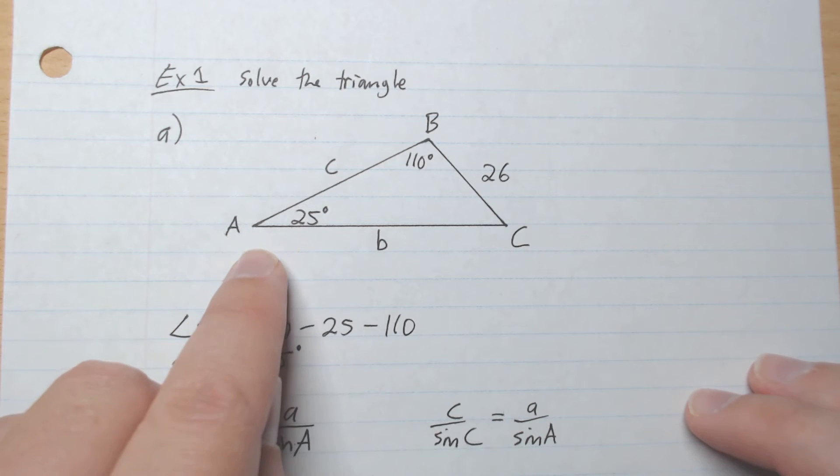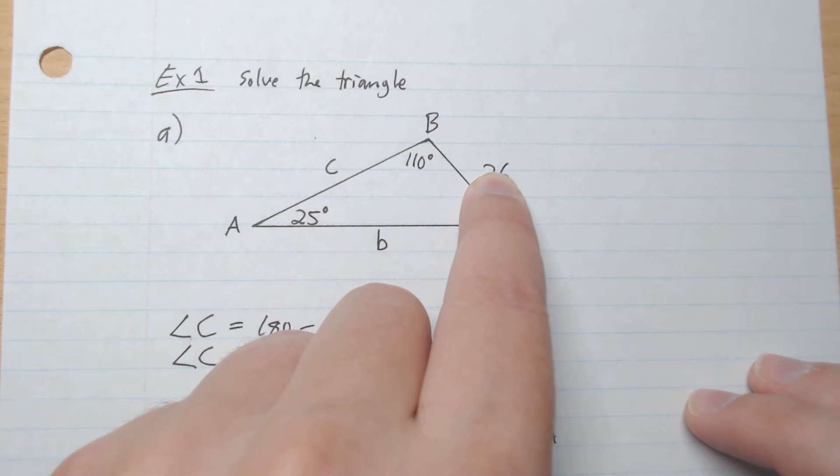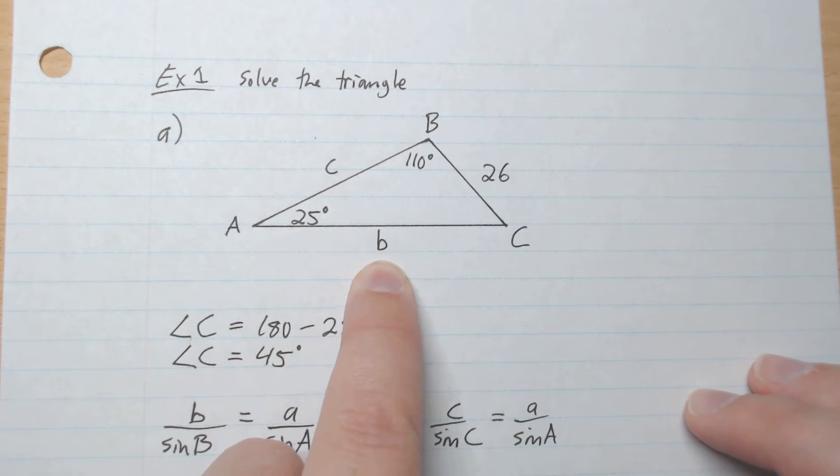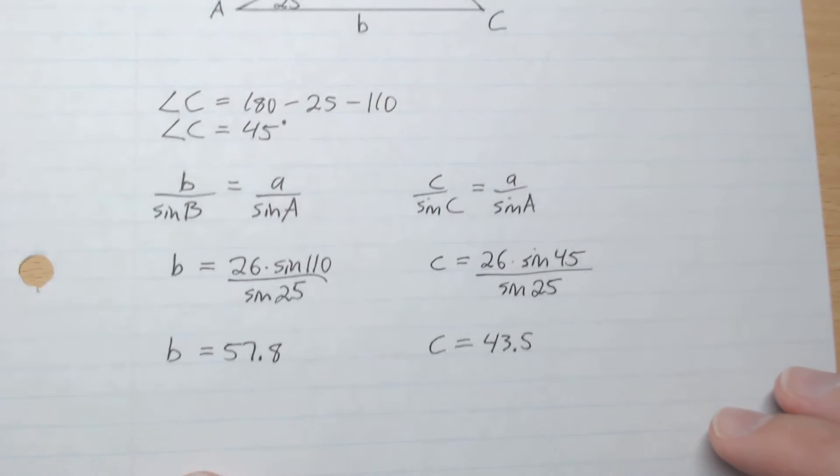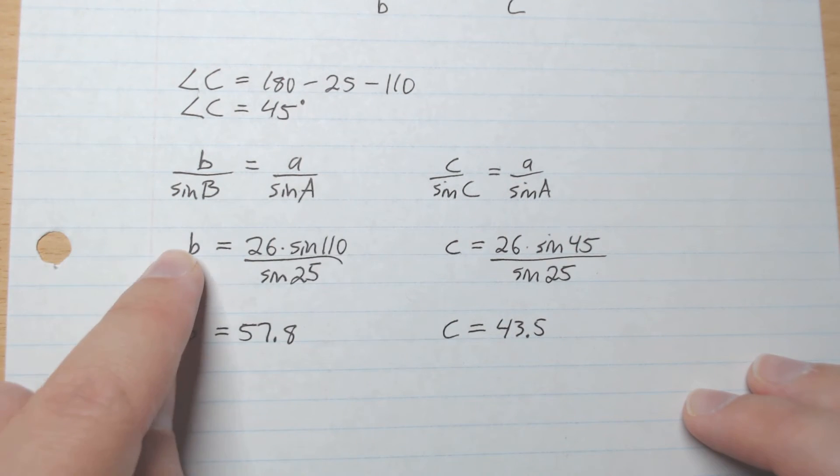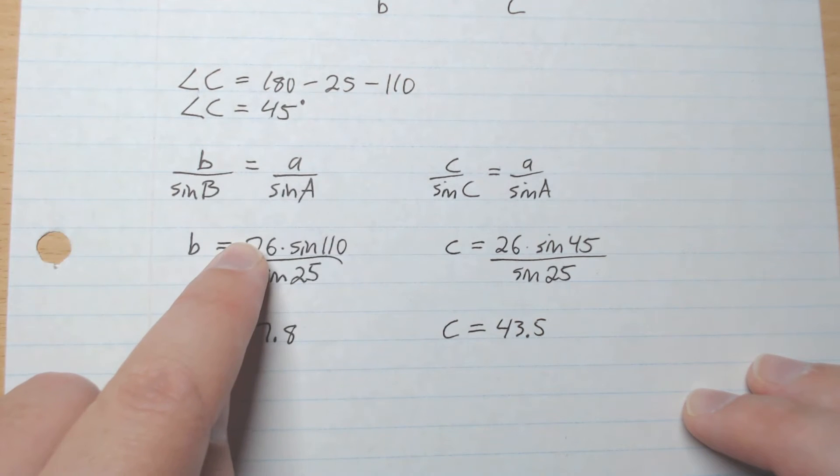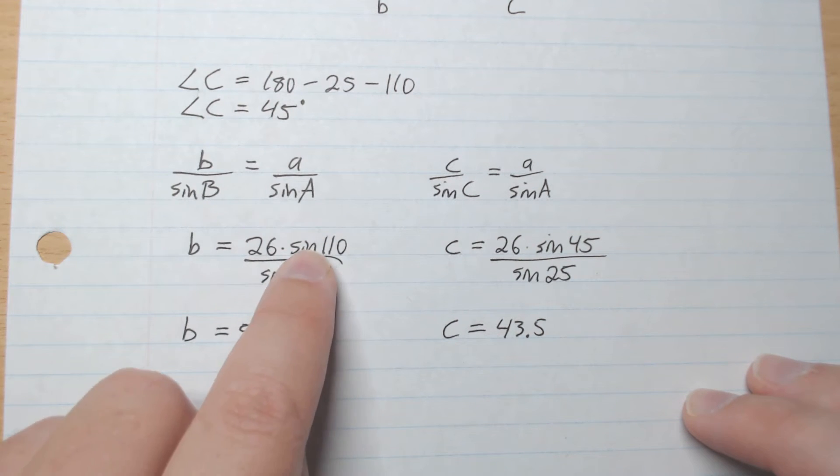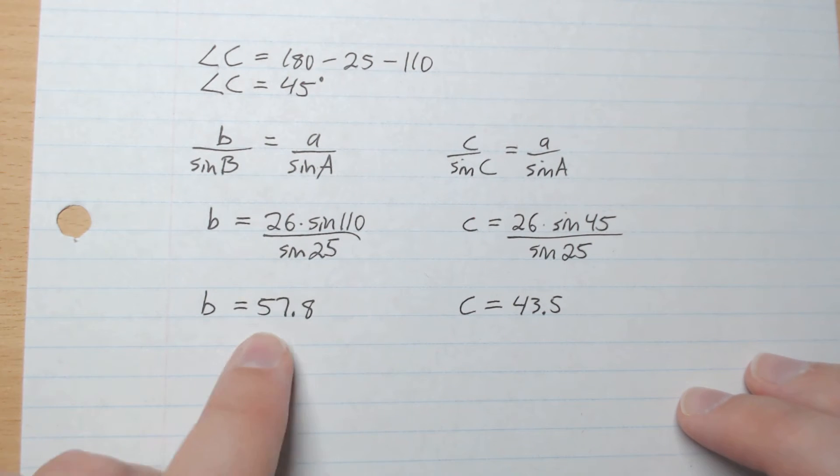So we have angle A and side a. We have angle B, but we're going to get side b. So we're going to write our equation like this. We're going to multiply sine B to both sides. So b equals a times sine B over sine A. a is 26, sine A is sine 25, and sine B is sine 110. Punch that in your calculator and you get 57.8 for side b.